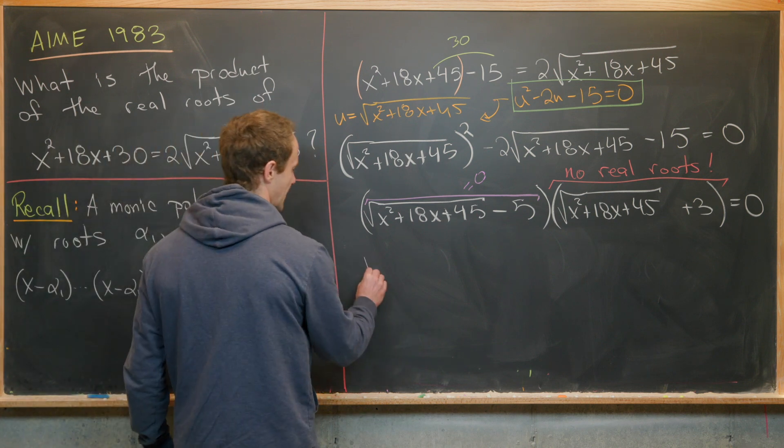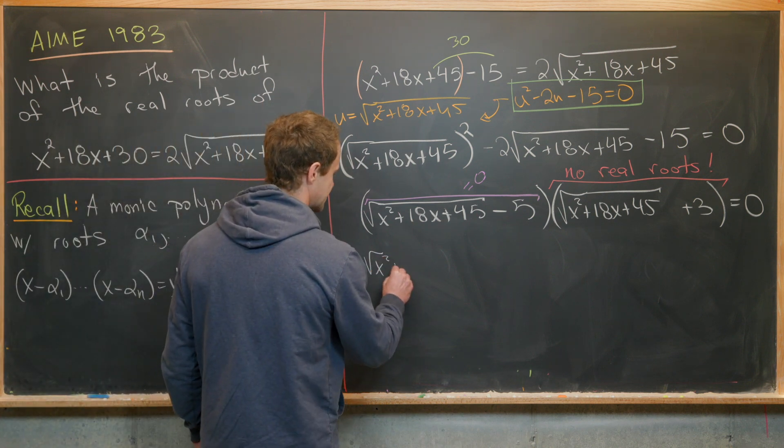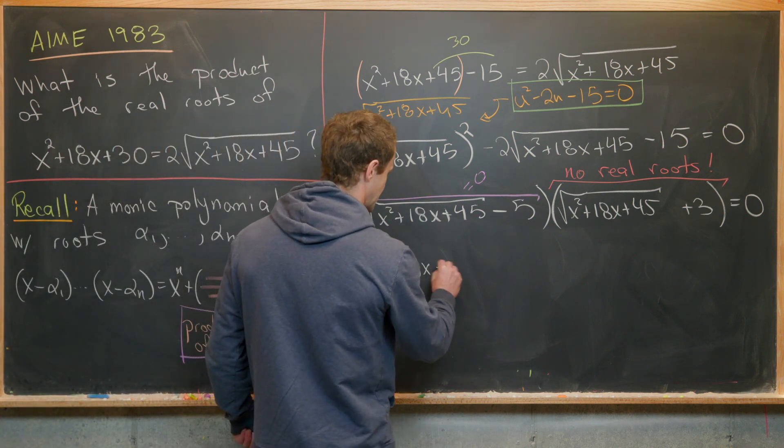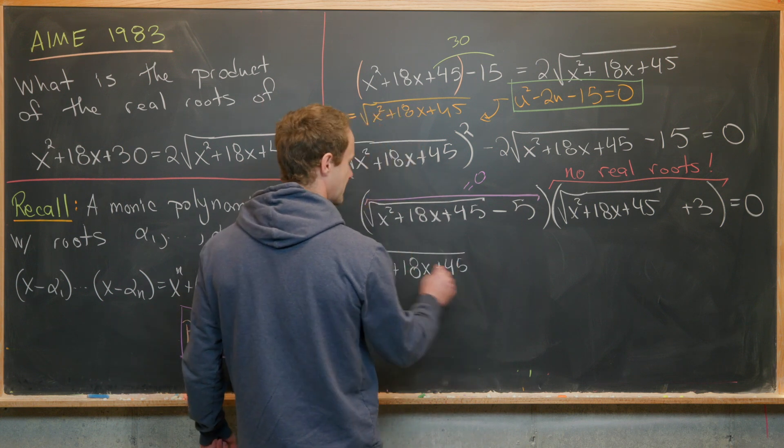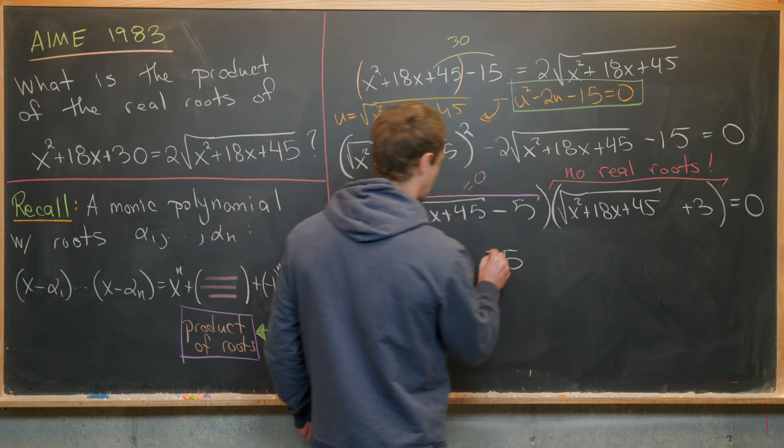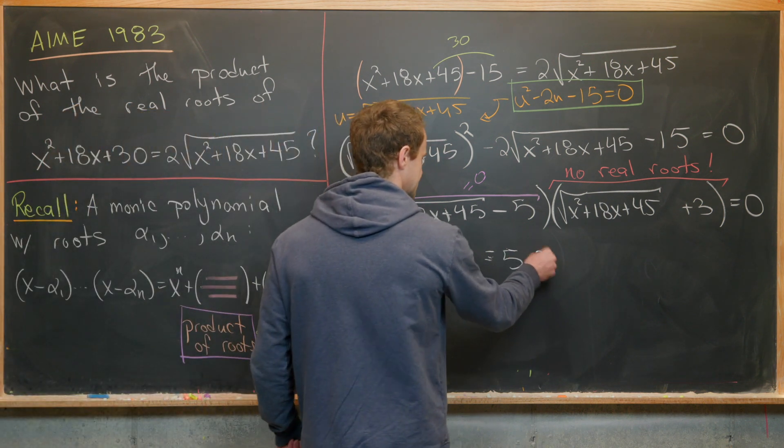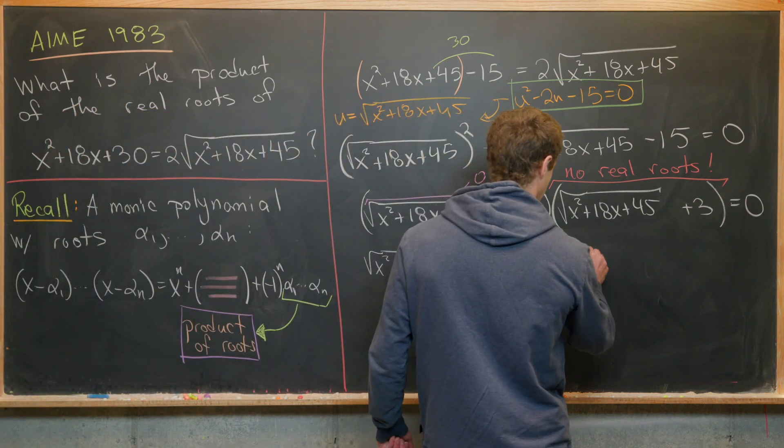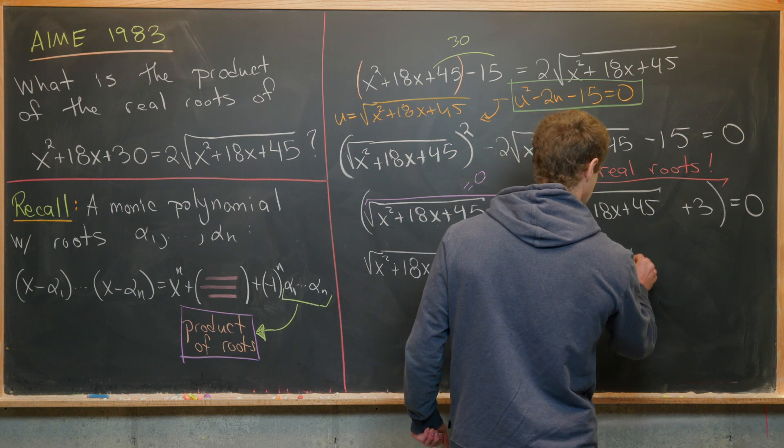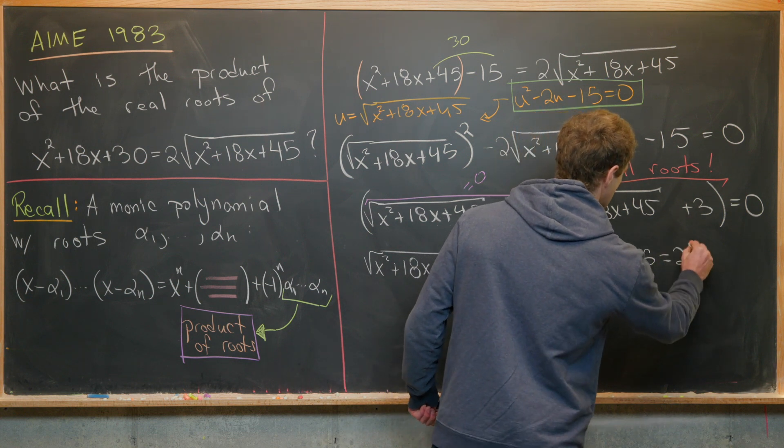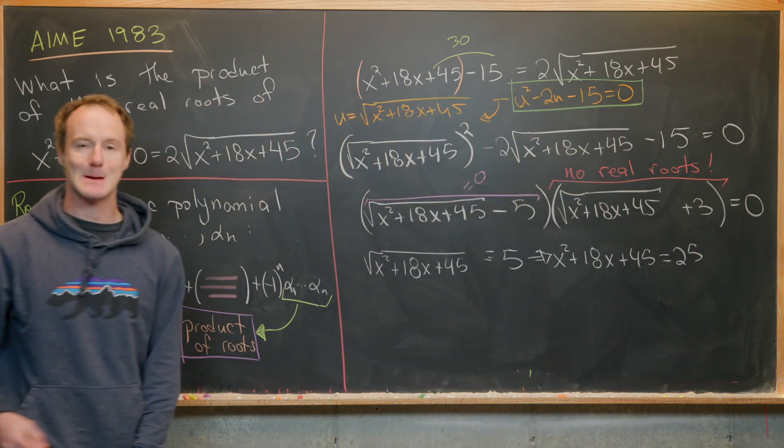So let's see what we get when we do that. We'll have √(x² + 18x + 45) = 5. Then we can square both sides, which gives us x² + 18x + 45 = 25.